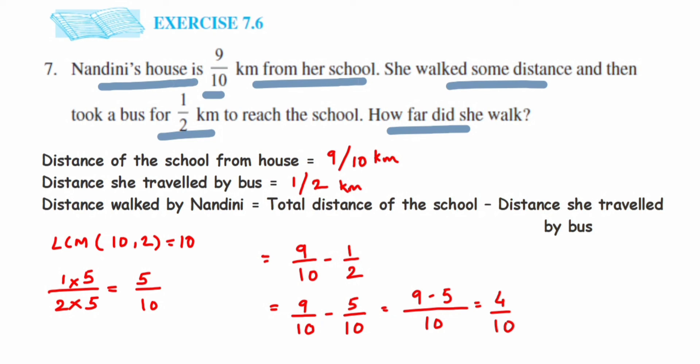So this will be 4/10. So we have to further cancel this. We have to bring this to reduced form. Cancel this in two table: two twos are 4 and two fives are 10. So answer will be 2/5 kilometer. So two-fifths kilometer she walked.